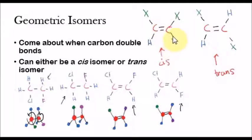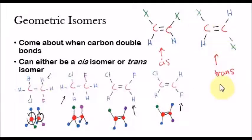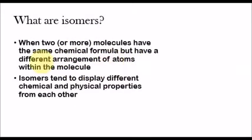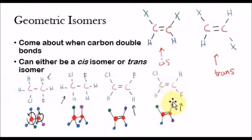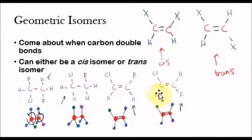It only happens when carbon double bonds. Whenever you have a double bond and the hydrogen atoms are on the same side, and the other two groups of atoms are on the same side as well, that's called the cis isomer. Whenever you have the hydrogen atoms on opposite sides and the other two groups of atoms on opposite sides, that's called the trans isomer. This would be the cis isomer, because the hydrogen atoms are on the same side. This would be the trans isomer, because the hydrogen atoms are on opposite sides and the chlorine and fluorine atoms are also on opposite sides.